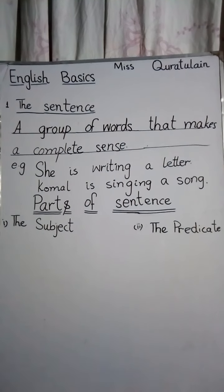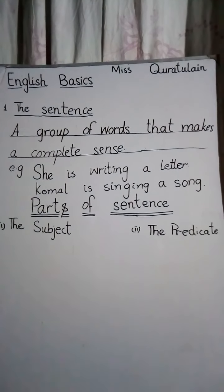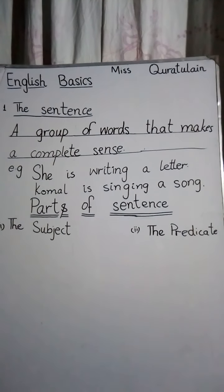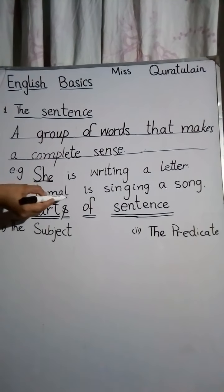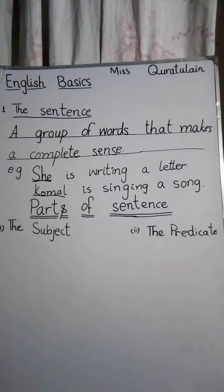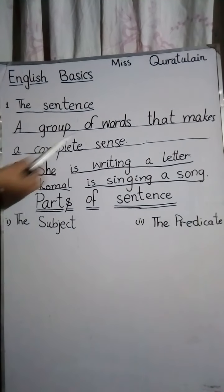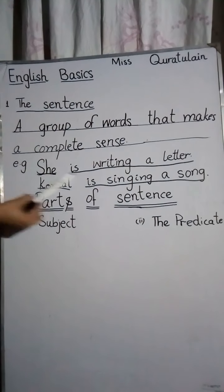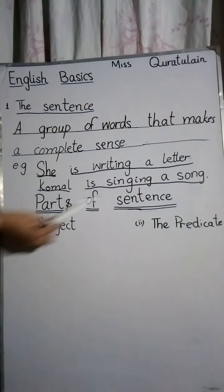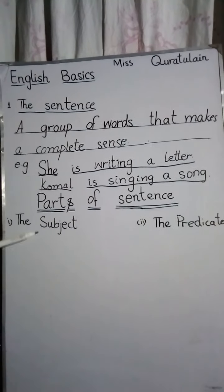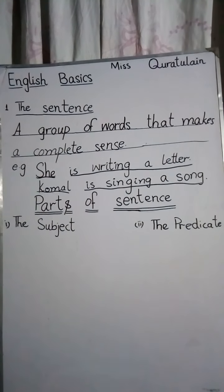Now, what is a predicate? The predicate is the part of a sentence which tells us something about the subject. For example, in the sentence 'She is writing a letter,' 'she' is the subject doing the action, and in 'Komal is singing a song,' 'Komal' is the subject. The remaining part — 'is writing a letter' — tells us about the subject and is called the predicate. So keep in mind: parts of a sentence are the subject and the predicate.